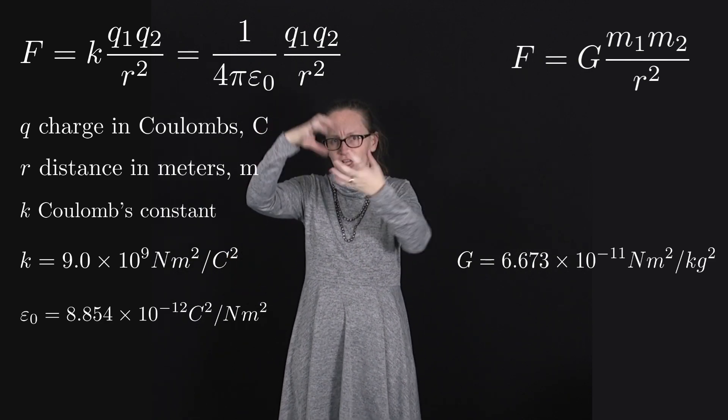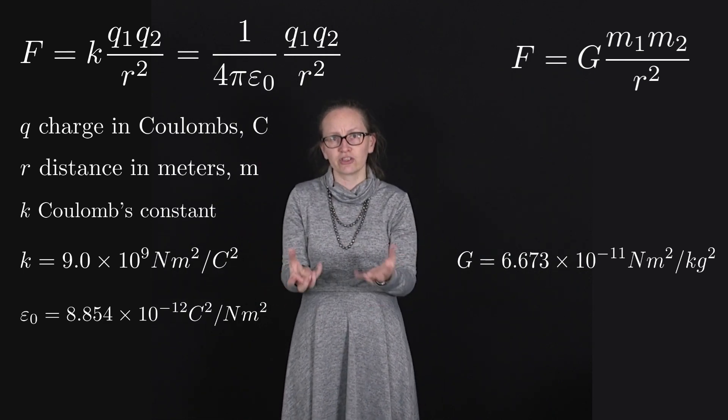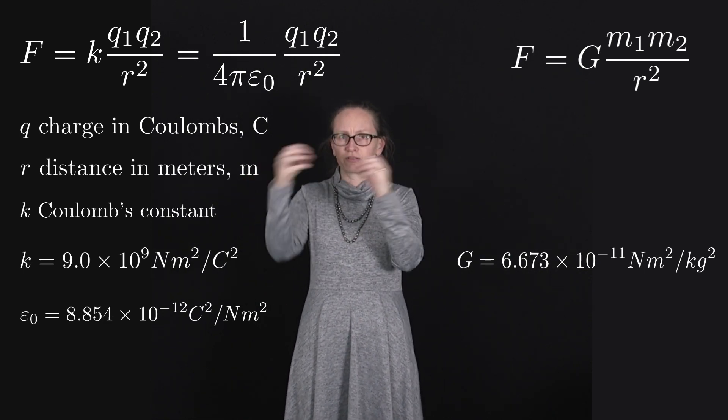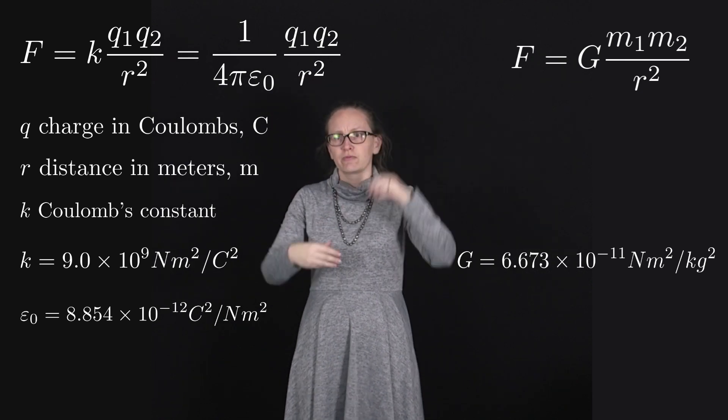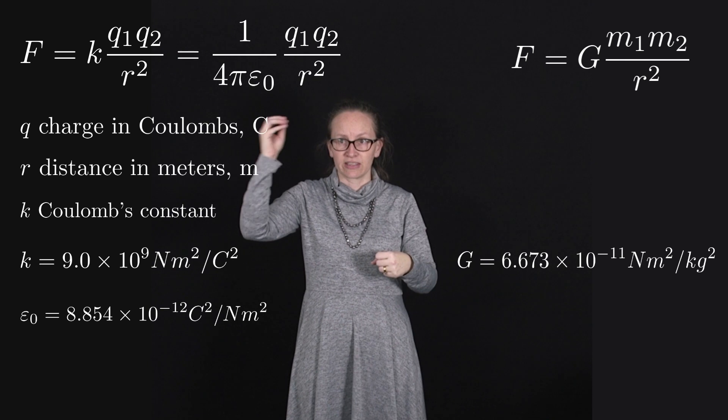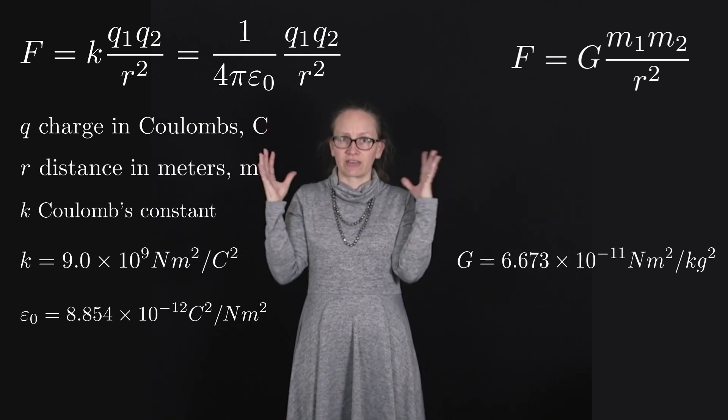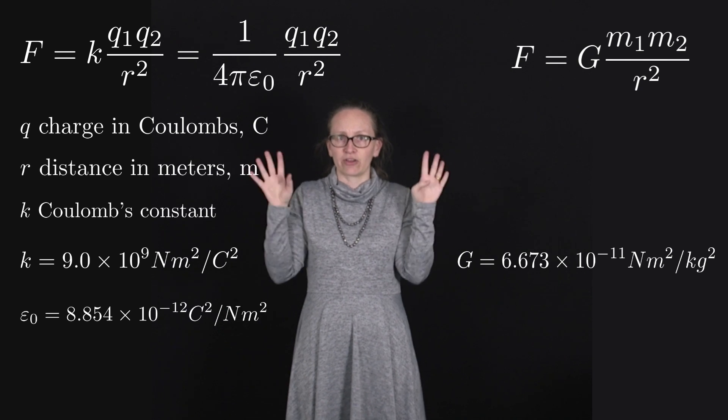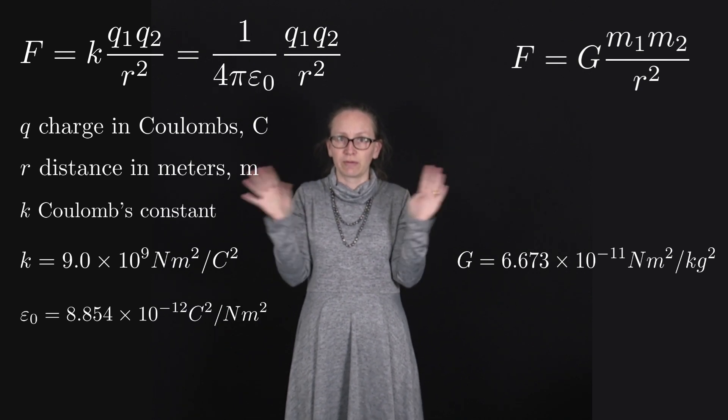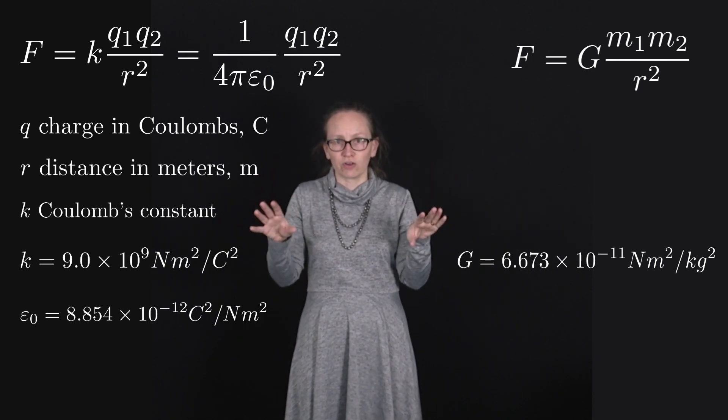So if we put lots of charged objects together in order to get a large charge then there is going to be a repulsive force between all of those which will be proportional to Coulomb's constant 9 times 10 to the 9 newton meters squared per coulomb squared and so this will give us a big number and that object just won't remain together it will explode underneath that repulsive force.